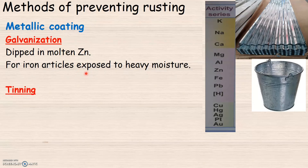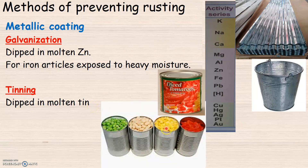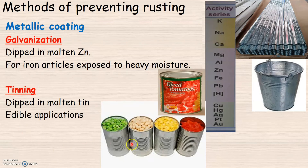The next method is tinning, where iron sheets are dipped in molten tin. These are commonly used as tinned cans to store vegetables, meats, etc. This method is used for iron articles that store edible substances. You may wonder why we use tin coating rather than zinc coating. This is because zinc reacts with food acids and produces compounds that are poisonous. That is why galvanized steel containers are not used as food containers.